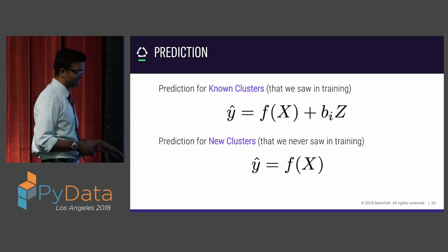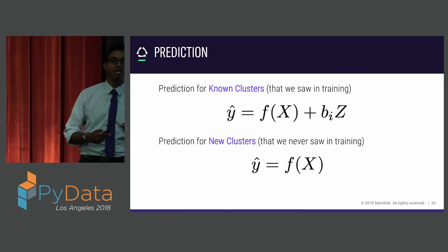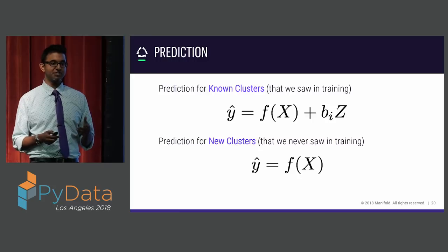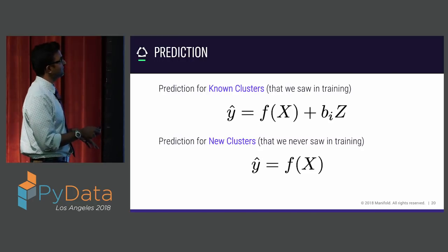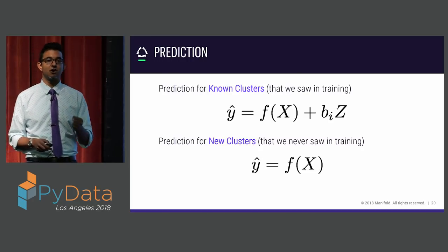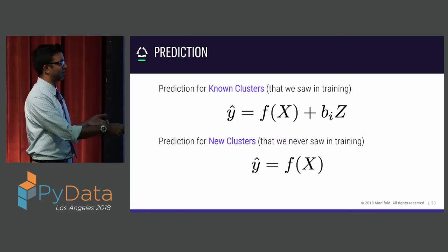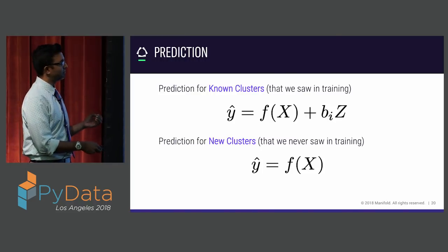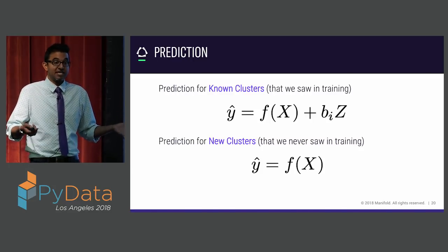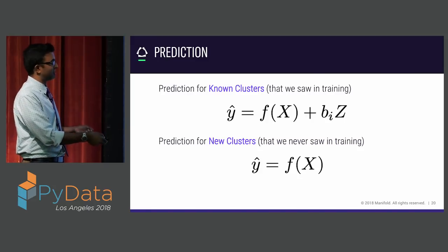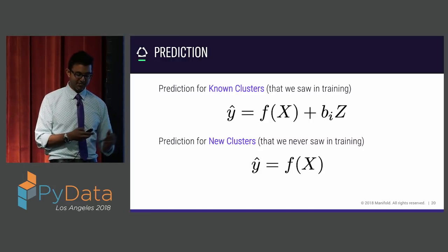At prediction time, there are actually two different types of predictions. There's prediction for known clusters — clusters seen in the training data. For those, I pass X through the random forest, take Z, multiply by B_i, and get my Y-hat. But there could be new clusters — say some counties had no training data. In that case, I just use the random forest part without applying the linear correction. The package supports both cases: internally it holds what cluster IDs it has seen, and if it's seen it, it applies the correction; if not, it uses the default random forest prediction.